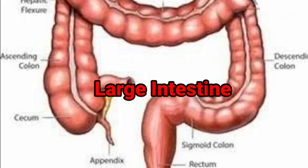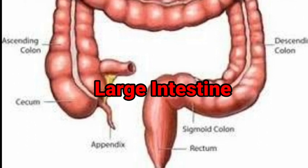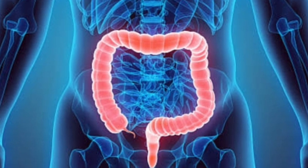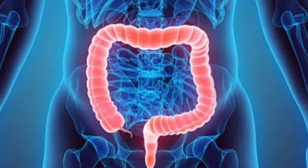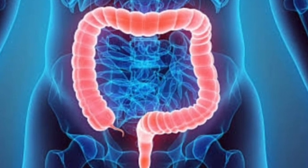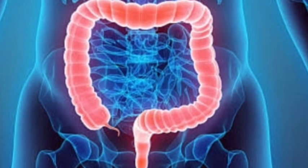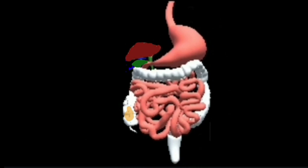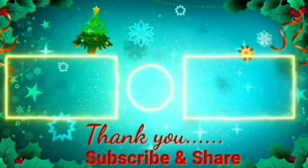The large intestine is a 1.5 meter long tube. It is wider and shorter than the small intestine. Undigested semi-solid food is passed from the small intestine to the large intestine. The large intestine absorbs water and salts from the undigested food. The remaining waste material then passes to the rectum and remains there for some time in the form of semi-solid feces. This waste fecal matter is then removed through the anus by the process called egestion.